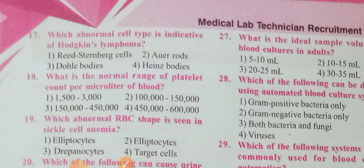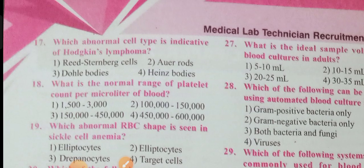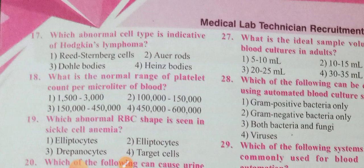Question 17: Which abnormal cell type is indicative of Hodgkin's lymphoma? Option 1 is the correct answer — Reed-Sternberg cells.